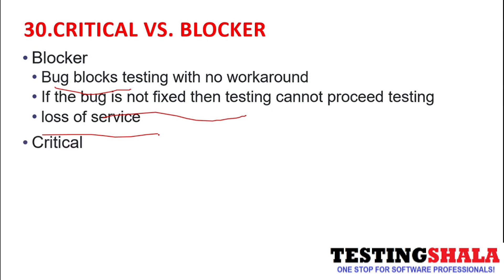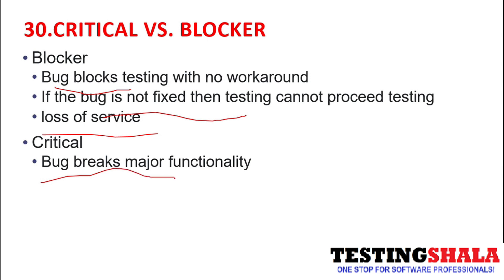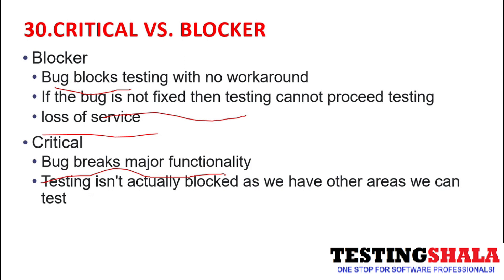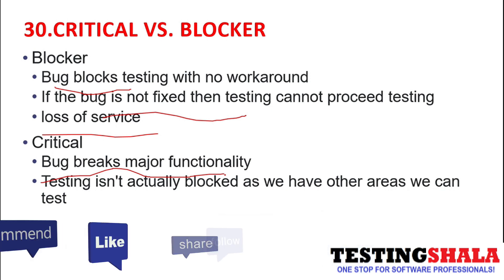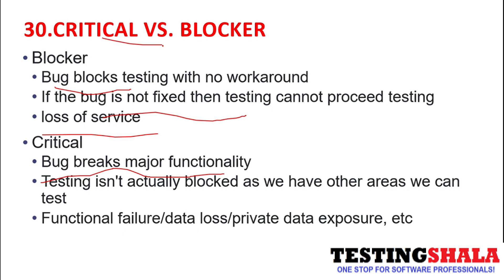Critical defects are bugs or defects which break the major functionalities of an application or product, but testing is not actually blocked. For example, if we have 10 functionalities and 2 are failing, the testing team can still continue working on the remaining 8 — that's when you call it a critical defect, not a blocker. Functional failure, data loss, or private data exposure are also logged as critical defects.